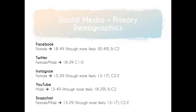In particular, we're going to be thinking about social media alongside the musicians and music videos that you have to study for Component 2 Section B. The first thing to be aware of is that each different social media platform these stars are likely to have will have a different primary demographic. For Facebook, the primary demographic is likely to be females aged 18 to 49, more likely in the 30 to 49 age range, and B2C2 on the ABC system. Twitter, on the other hand, is an equal split between females and males, tending to be a younger demographic of 18 to 29 year olds who are often very socially aware with strong opinions, perhaps C1 to D on the ABC scale.